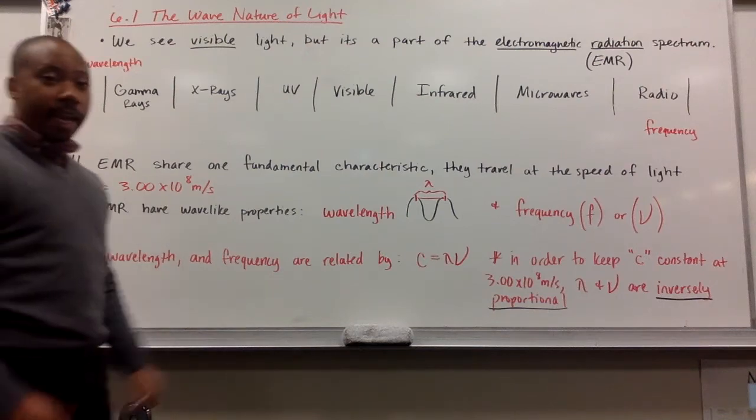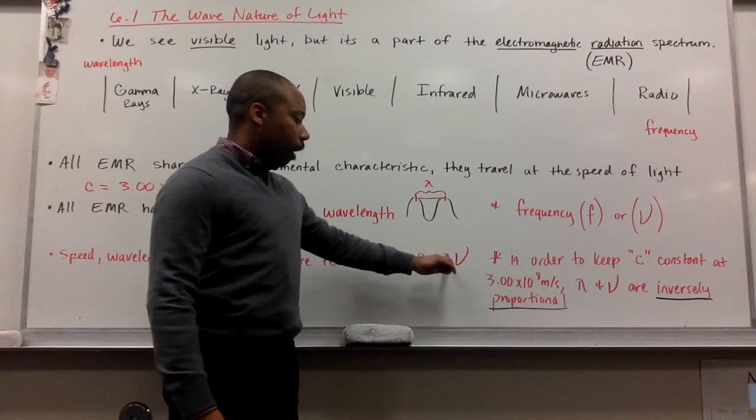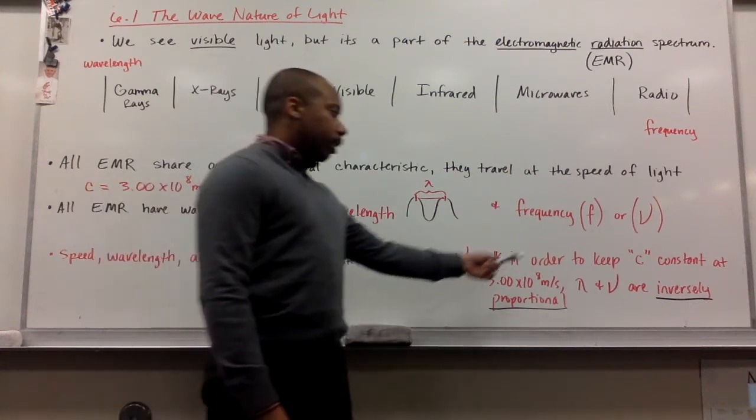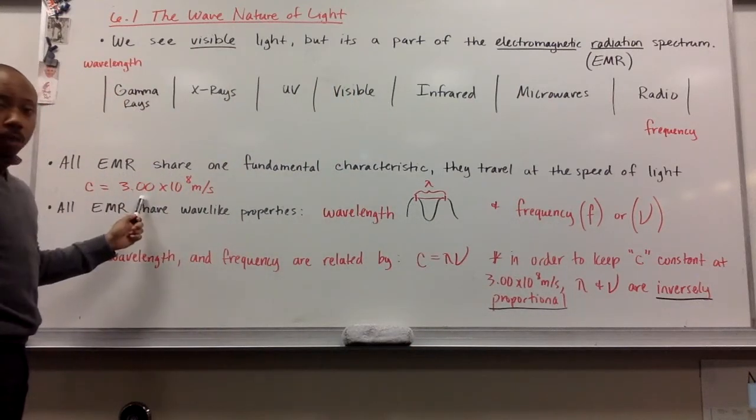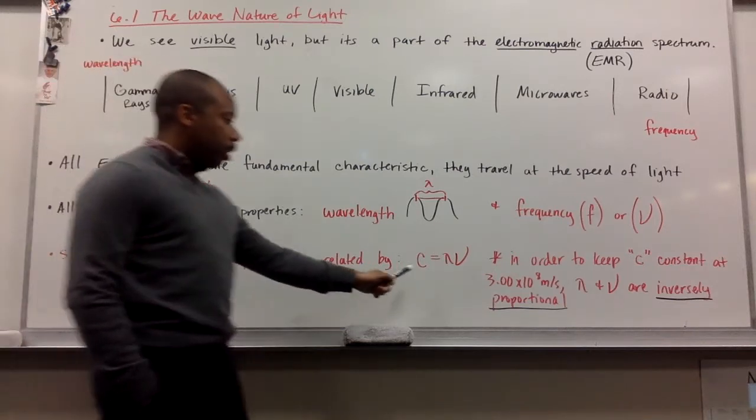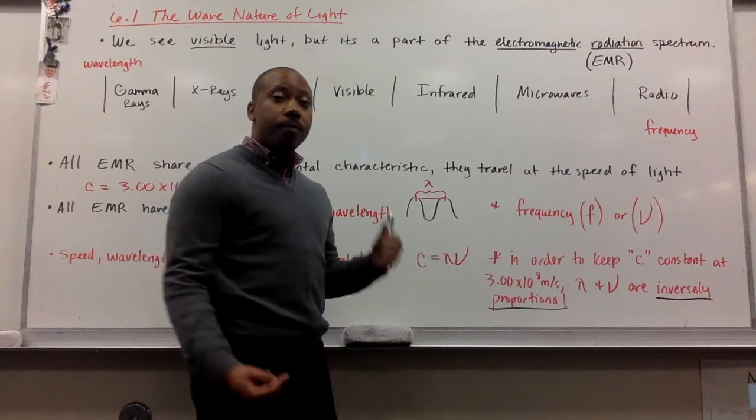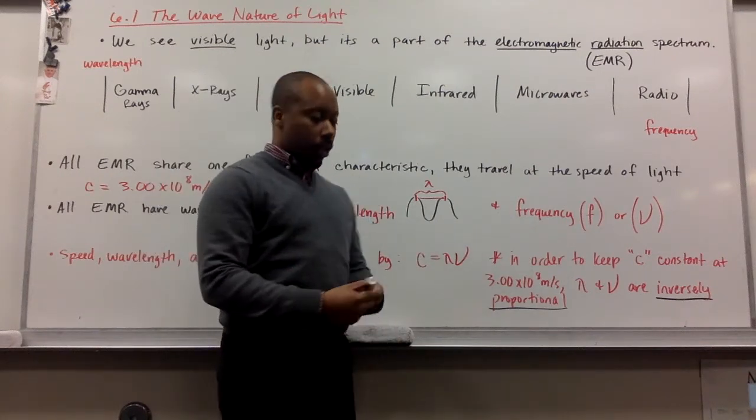Speed, wavelength, and frequency can be related by this equation: C equals wavelength times the frequency. In order to keep C constant, meaning the speed of light does not change, wavelength and frequency have to be inversely proportional, meaning as one increases, the other decreases.